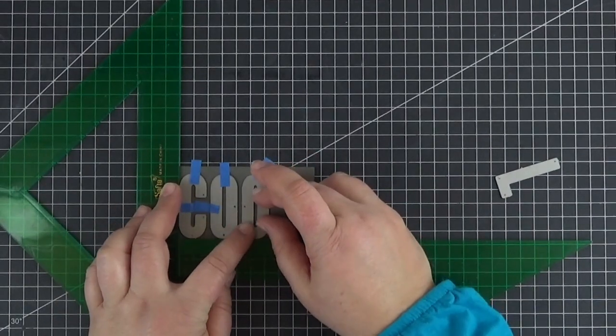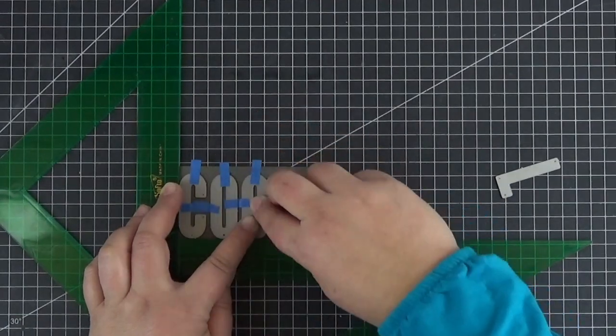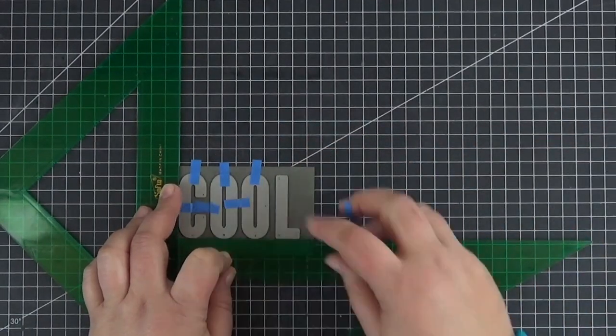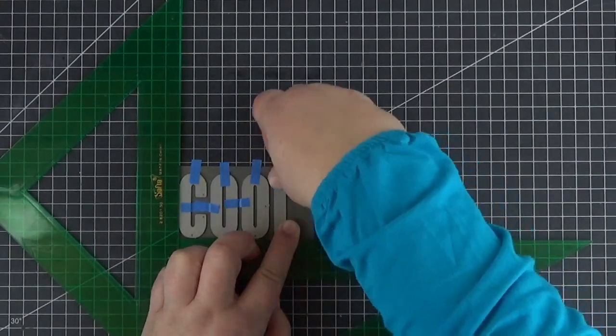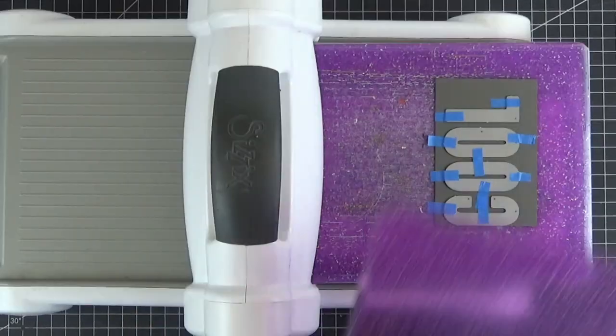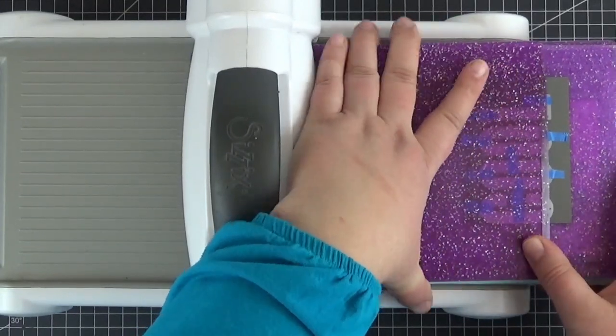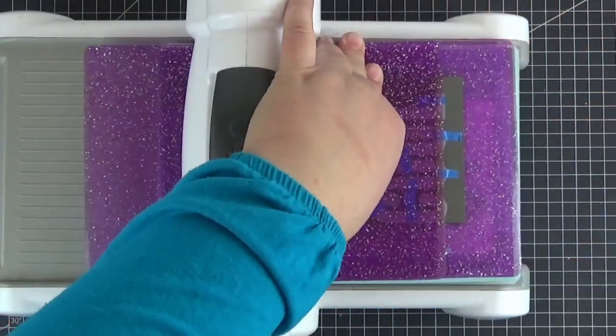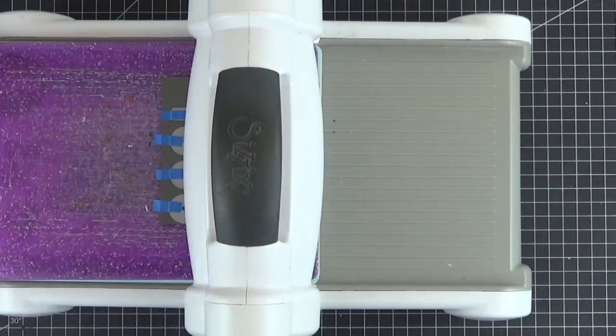If you choose a word with repeated letters, you can just die cut them normally and adhere them one by one to the cellophane strip later on. However, to me it's easier to align them this way. As you can see, I'm placing the upper cutting plate about one-eighth of an inch from the edge of the dies. That way they won't be completely cut and will hang together.